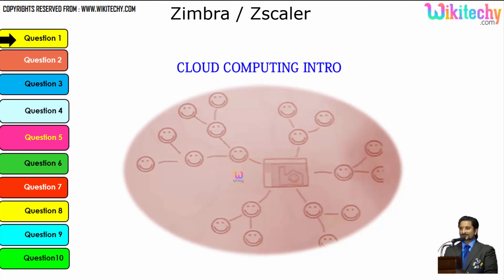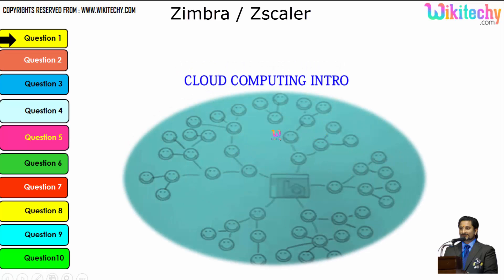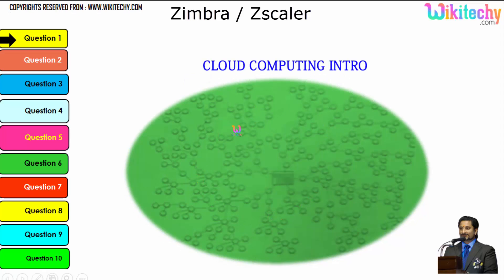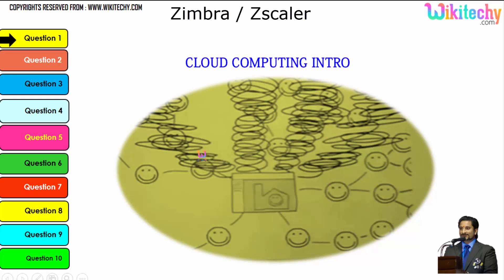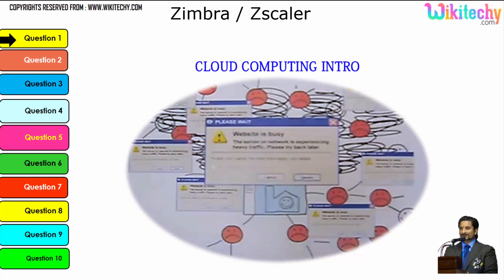Let's talk about the cloud computing intro. Here is a computer connected to a server, and this server is monitoring this computer. Once the network becomes bigger, the monitoring becomes tougher. If more computers are added, the network grows larger and the monitoring system becomes really slow. There is a possibility that the network crashes or the server couldn't monitor specific networks.